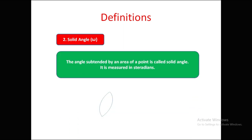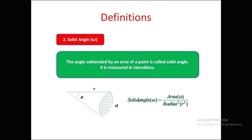The next definition is solid angle omega. Solid angle is the angle subtended by an area at a point. It is measured in steradians. In the previous case the angle was subtended by an arc, but here it involves an area.